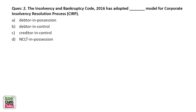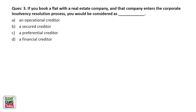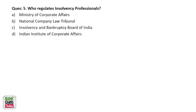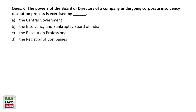Quiz questions: IBC has adopted a creditor-in-control model for CIRP. If you book a flat with a real estate company and that company enters CIRP, you become a financial creditor. A creditor can initiate PPIRP when the debtor company has defaulted by at least 10 lakh rupees — above 1 crore requires CIRP. IBBI regulates insolvency professionals in India. The power of the board of directors of a company undergoing CIRP is exercised by the resolution professional, who takes complete control of the company's assets.